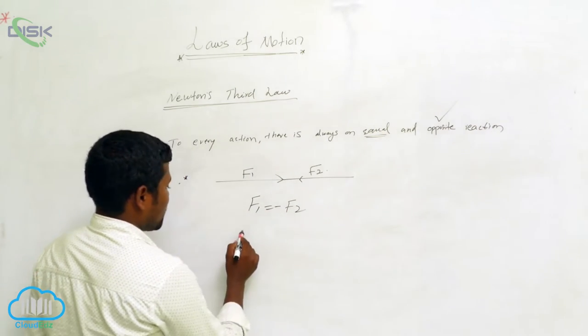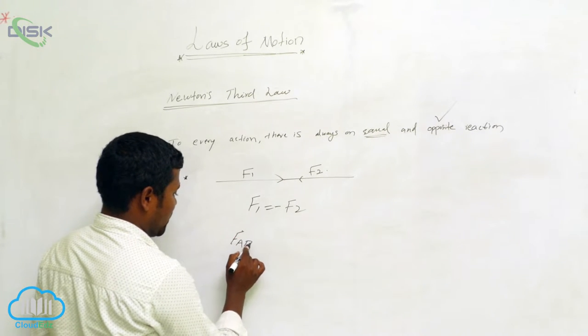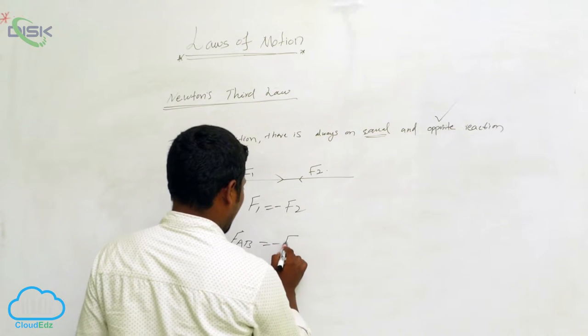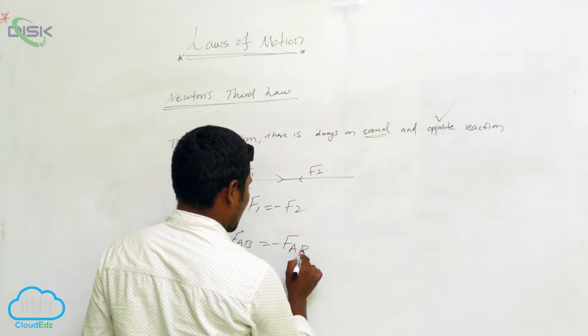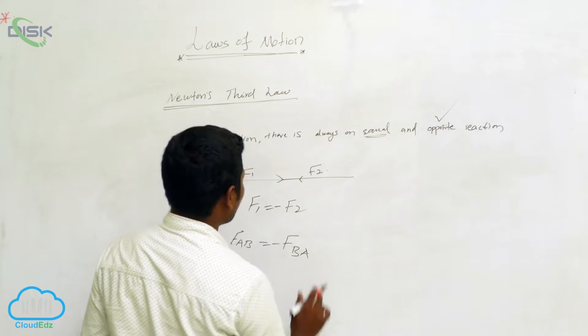Or else, let us take in this direction. In your textbook like this they have taken. FAB is equal to minus FBA we can write. This is also same statement.